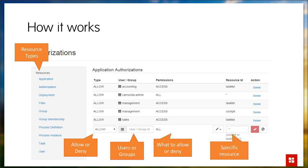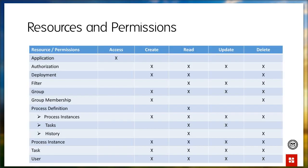Looking at what permissions I can grant or deny, it's about creating, reading, updating, or deleting — not very surprising. For process definitions specifically, I can say for all process definitions or for a specific one — for example, the invoice process — I want to allow a certain group or user to create new process instances, start this process, look at running process instances, work on them, or even cancel them. This is all possible using this approach.